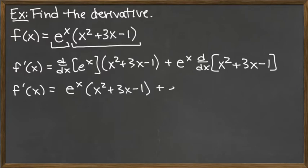And then we have plus e to the x times the derivative of that polynomial. So that polynomial, we take the derivative term by term using a constant multiple rule and the simple power rule for each one.